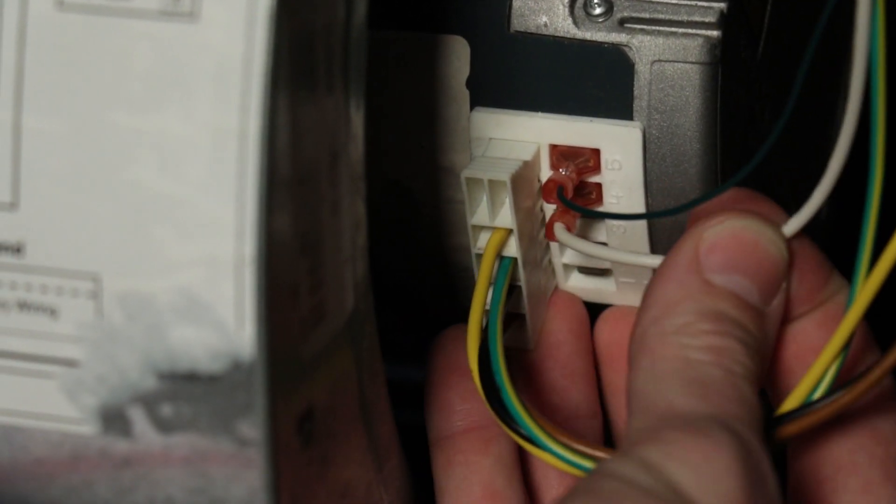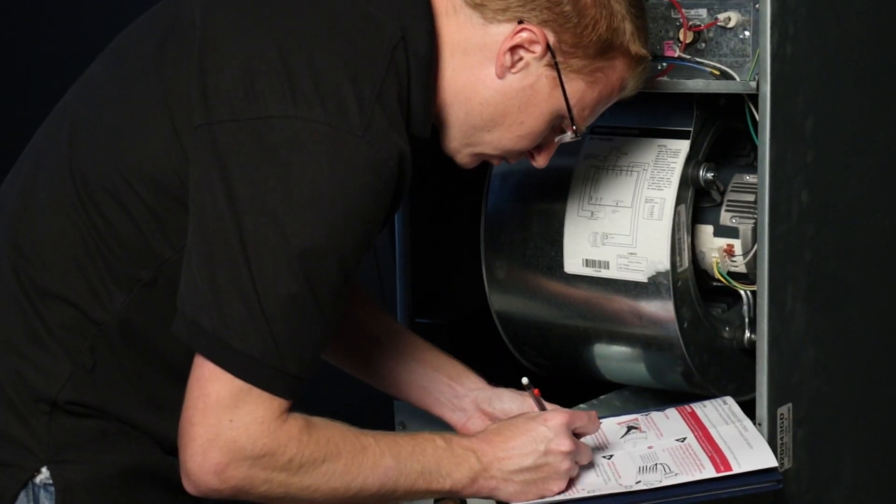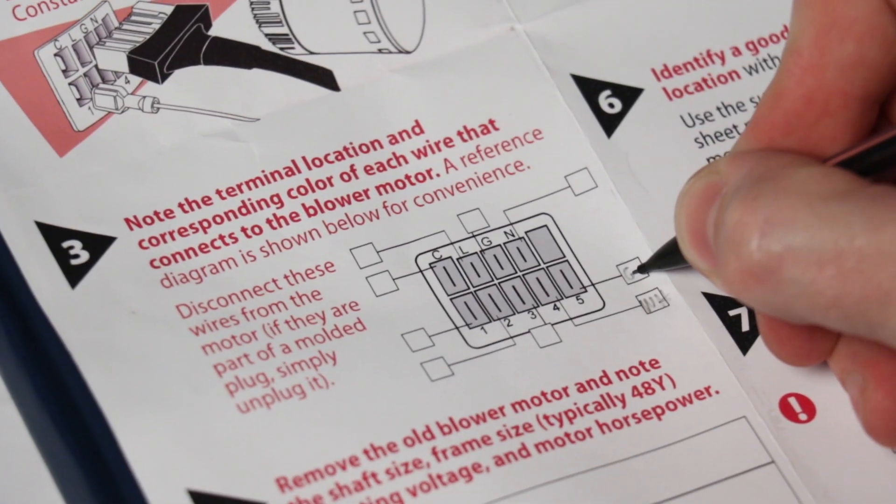Step three: note the terminal location and corresponding color of each wire that connects to the blower motor. Write the color of these wires on the diagram shown in the instruction sheet.